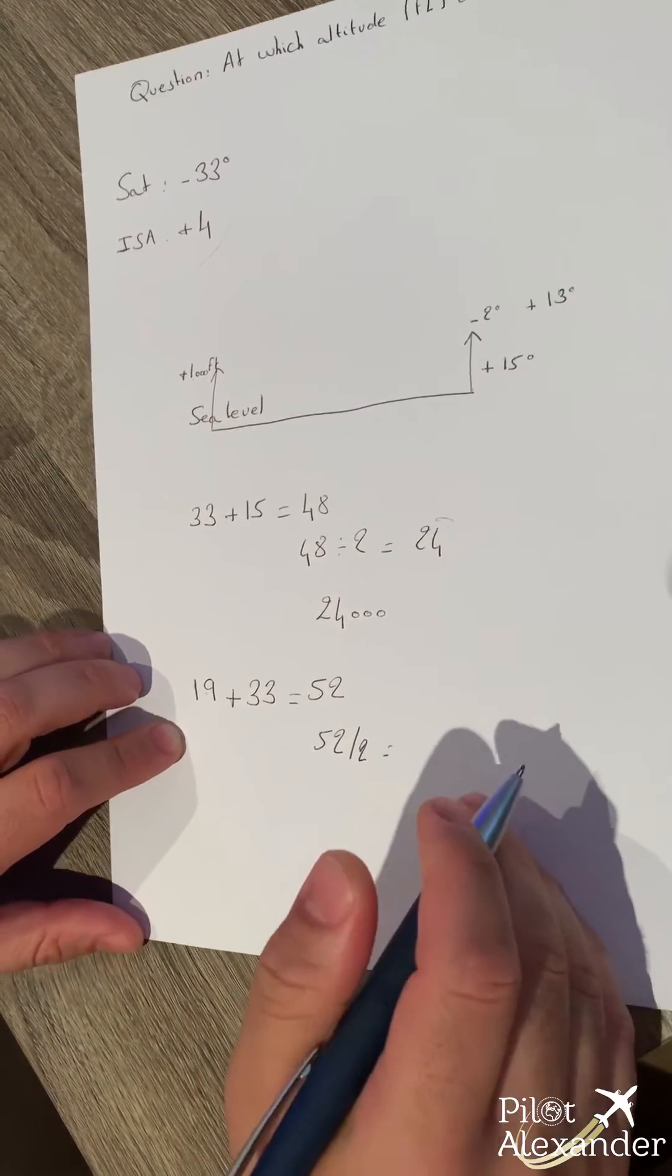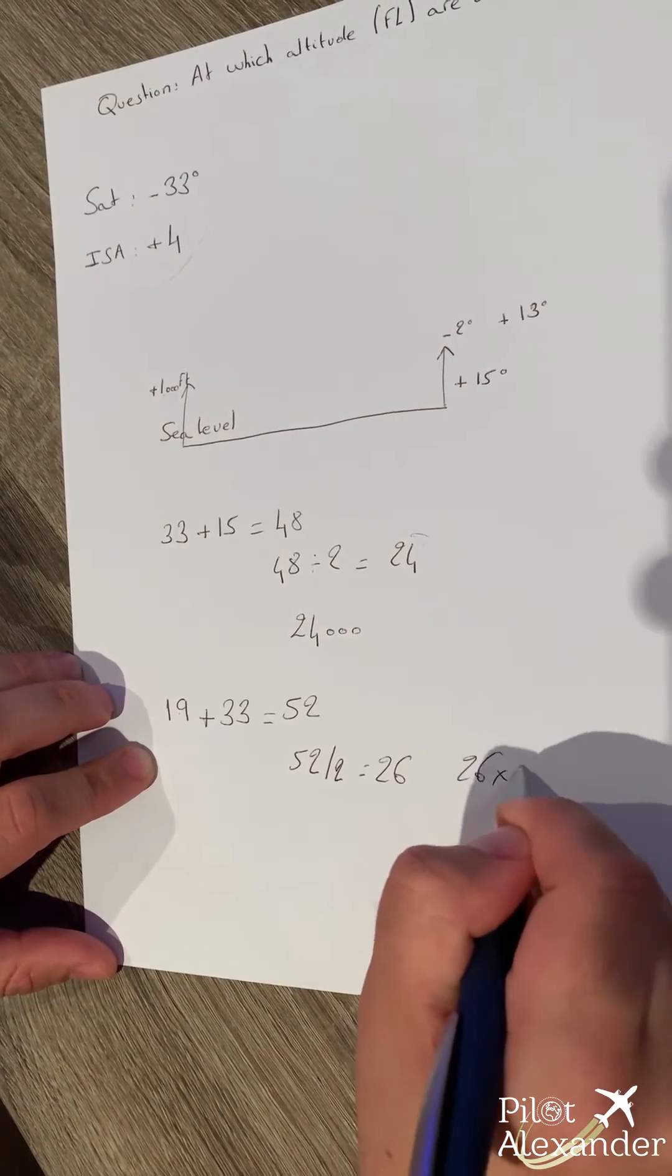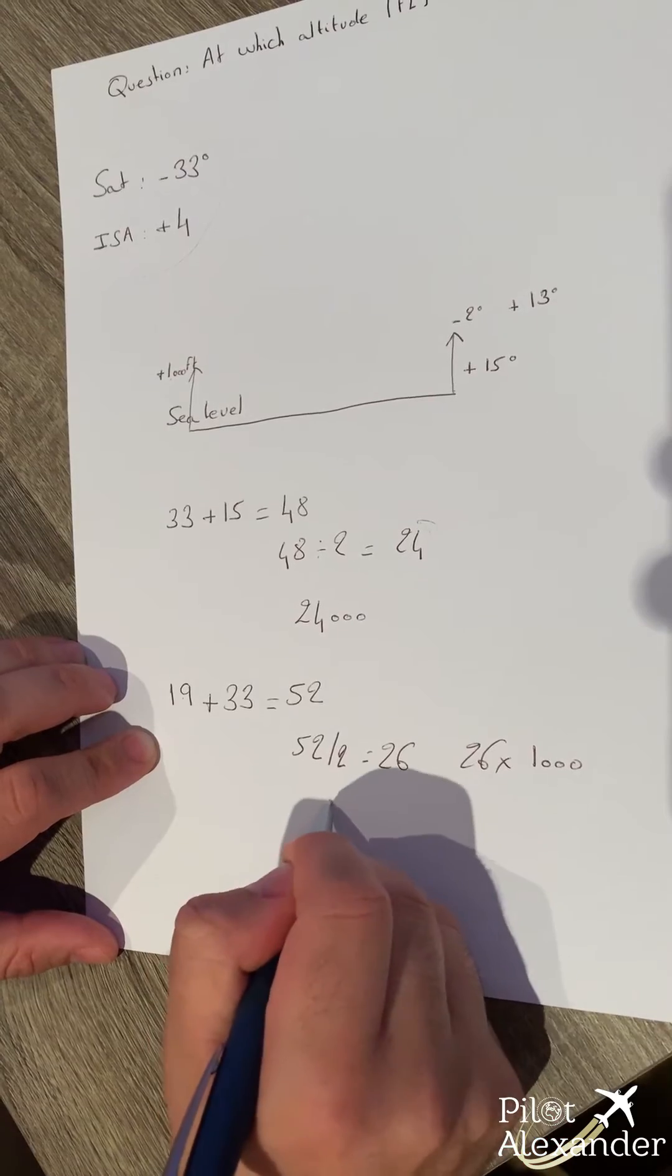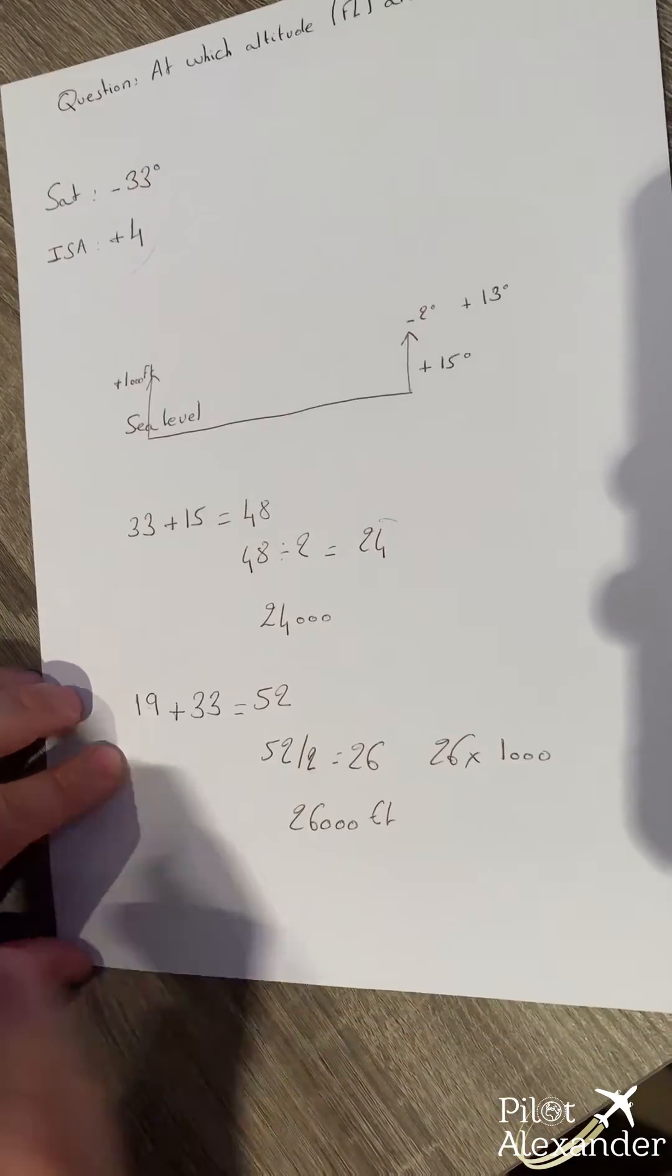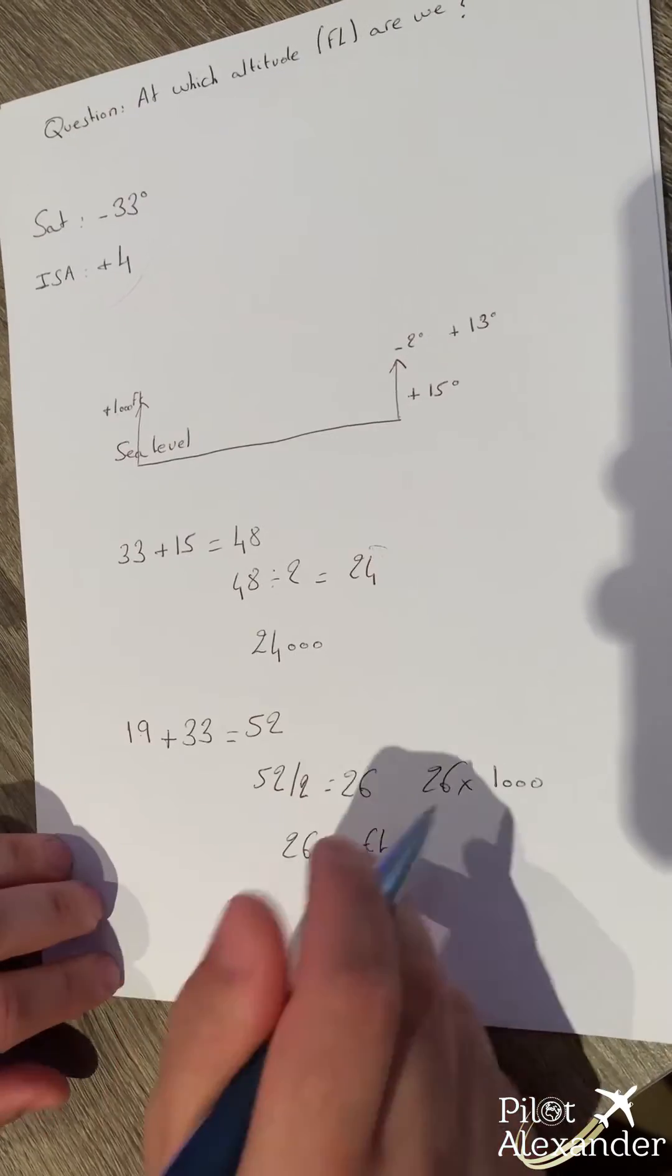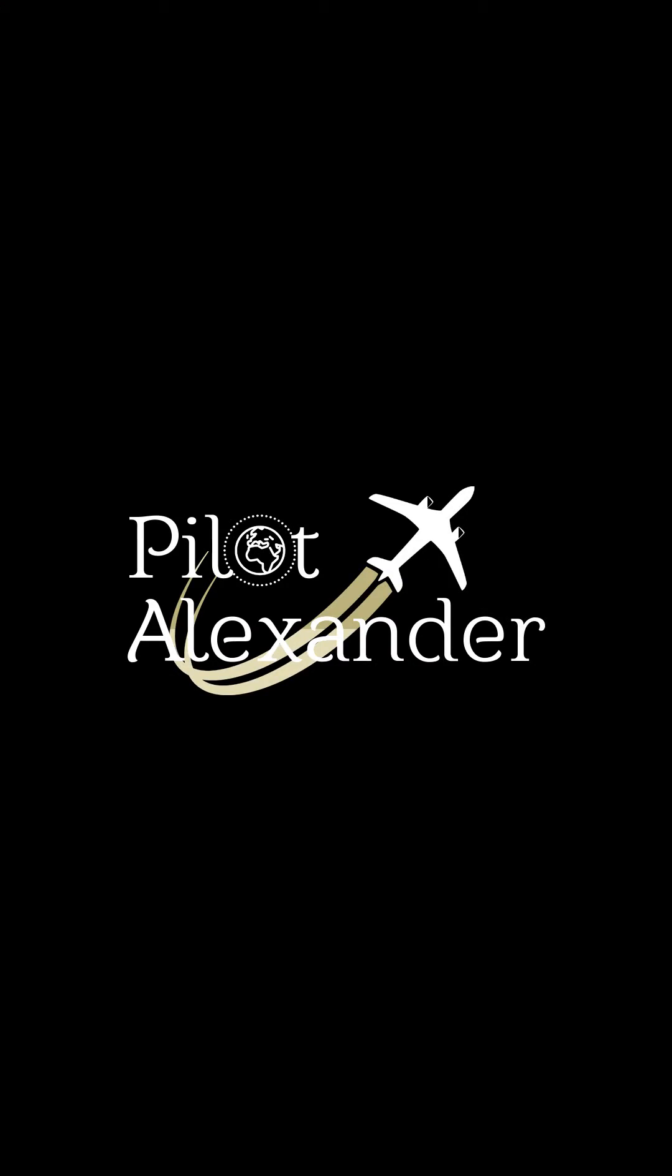52 divided by two, 26. So now, 26 times 1,000, 26,000 feet. There it is. That is the correct answer. So big up to Captain Khalifa. Thank you so much for giving us such a hard equation to solve. And this is it, Karim. Thank you so much, guys. Cheers.